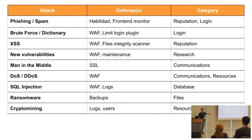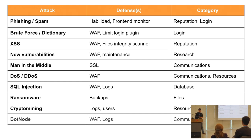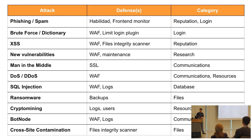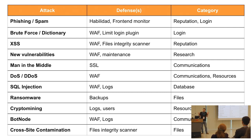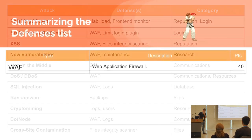For crypto mining: check logs and open channels to hear your users, because if your users are the target they should have a way to contact you. For botnets: WAF and logs. For cross-site contamination, there is no other way of detecting an internal infection than the file integrity scanner - something changes, you check the file, and then you know there is an infection. The WAF won't detect it, and the logs will be very noisy.